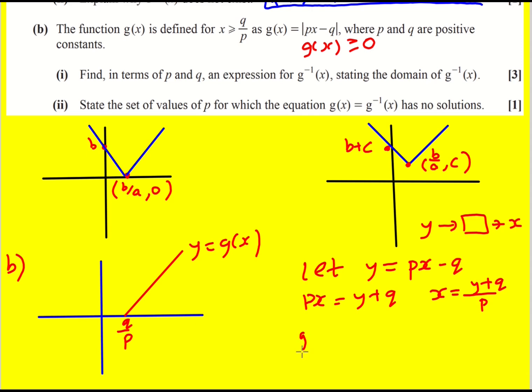But to write it as the inverse we then put it back in terms of x. So the inverse is equal to (x + q)/p and the domain is going to be that x is greater or equal to zero because like I said before it's the same as the range of the original function.